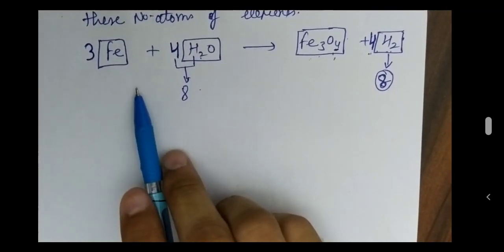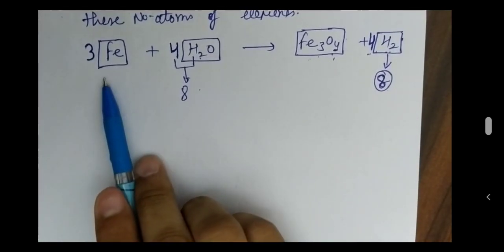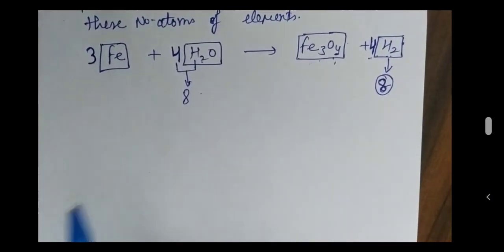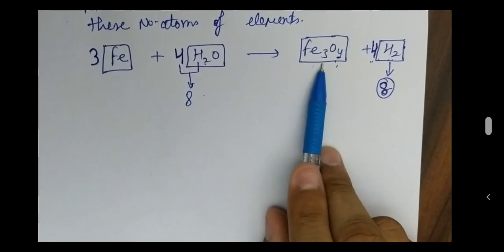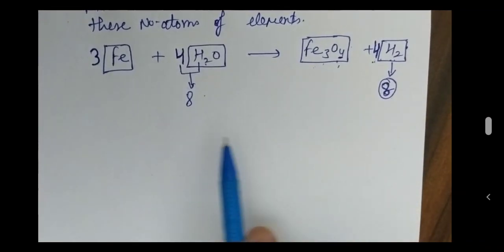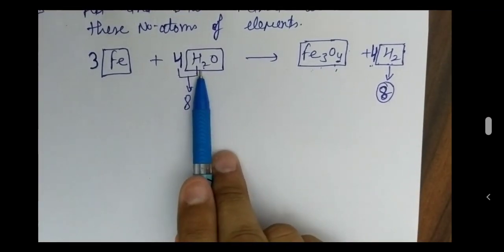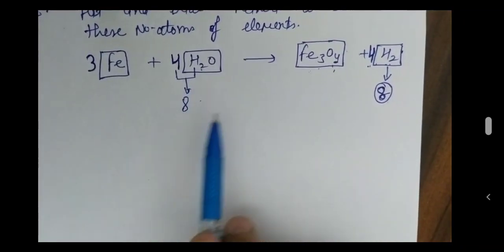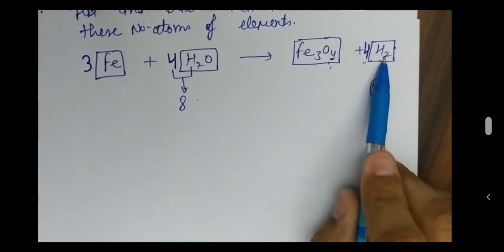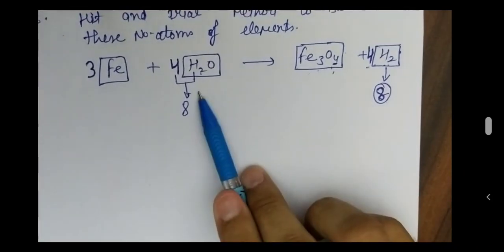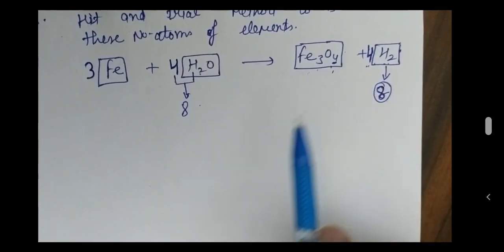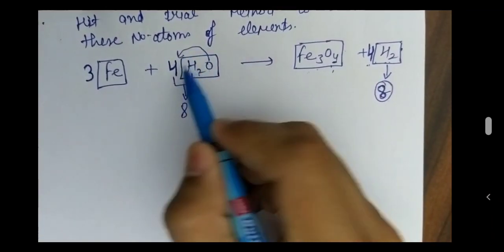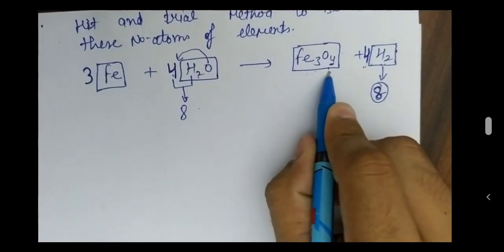Checking the equation: on the left hand side iron has 3 atoms, and on the right hand side we also have 3 — iron is balanced. Hydrogen: 4 × 2 = 8 on the left, and 4 × 2 = 8 on the right — balanced. Oxygen: 4 on the left and 4 on the right — balanced. The equation is now balanced.